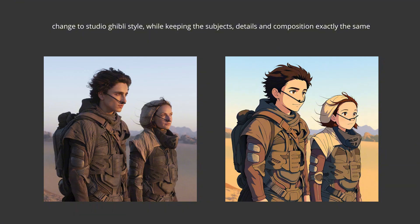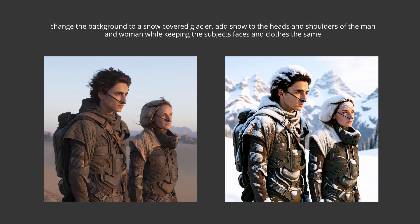Another style change, this one for a scene from Dune: change to Studio Ghibli style while keeping the subjects, details, and composition exactly the same. The sentence structure I'm using is quite simple — make a change first, then specify what you want to keep the same. This one keeps the man and woman, all their clothing, the little details on the clothing, and even the background. So style changes work pretty well. The next prompt is not a style change, but adding elements: change the background to a snow-covered glacier, add snow to the heads and shoulders of the man and woman, while keeping the subjects' faces and clothes the same. It's added all the different background elements and snow on top of their clothes and hair — pretty realistic for the most part.